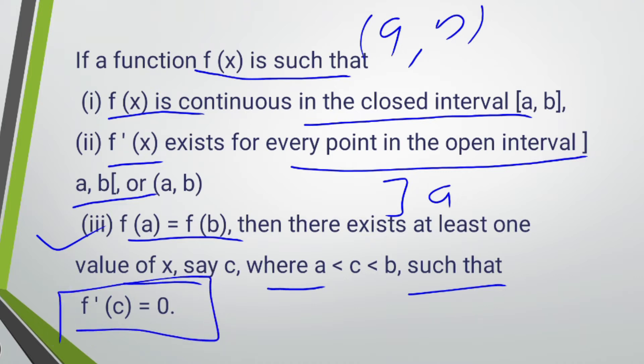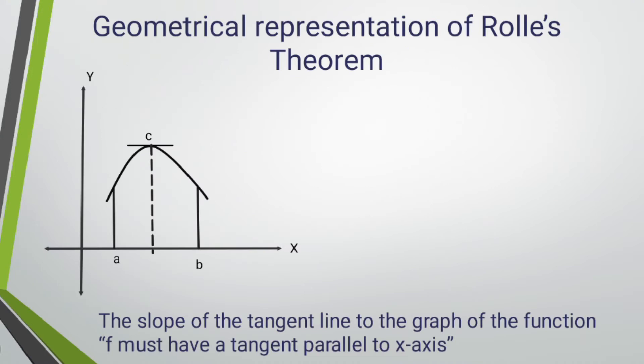Let's try to understand the geometrical interpretation of these statements. Basically, the geometrical interpretation is that the curve representing the graph of the function f must have a tangent parallel to the x-axis at least at one point between a and b.